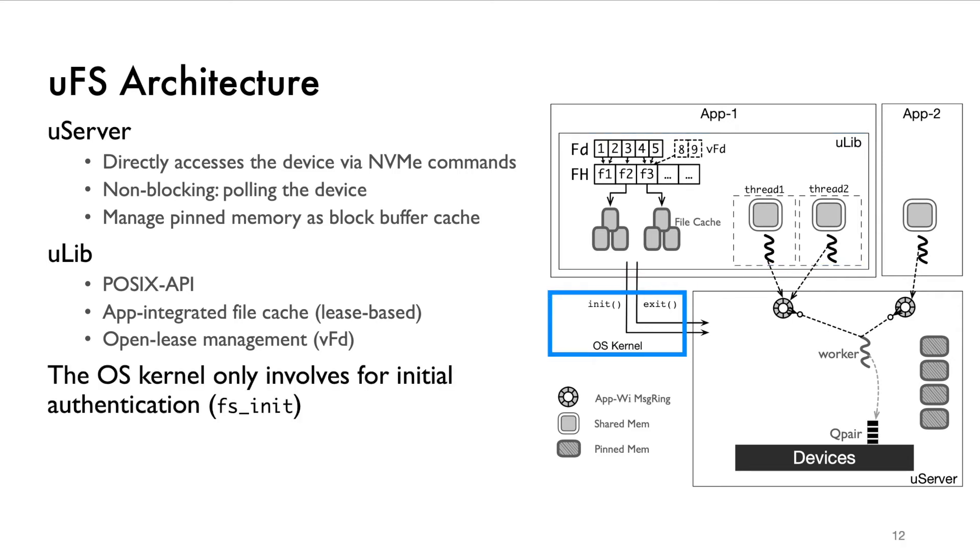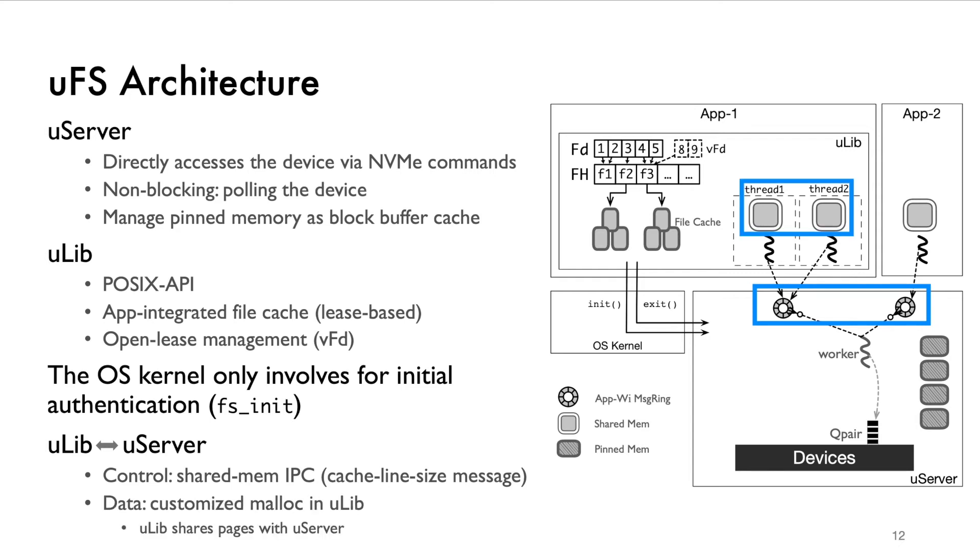Any modification will invalidate the read leases like write and unlink. UFS ensures security protection by forcing the initial authentication to go through the host OS kernel but avoiding any subsequent kernel involvement. We leverage CPU cache-to-cache transfer between ULIB and USERVER as a communication channel where each file system call becomes the message of cache line size. For better protection, each application has its own message ring to a single worker.